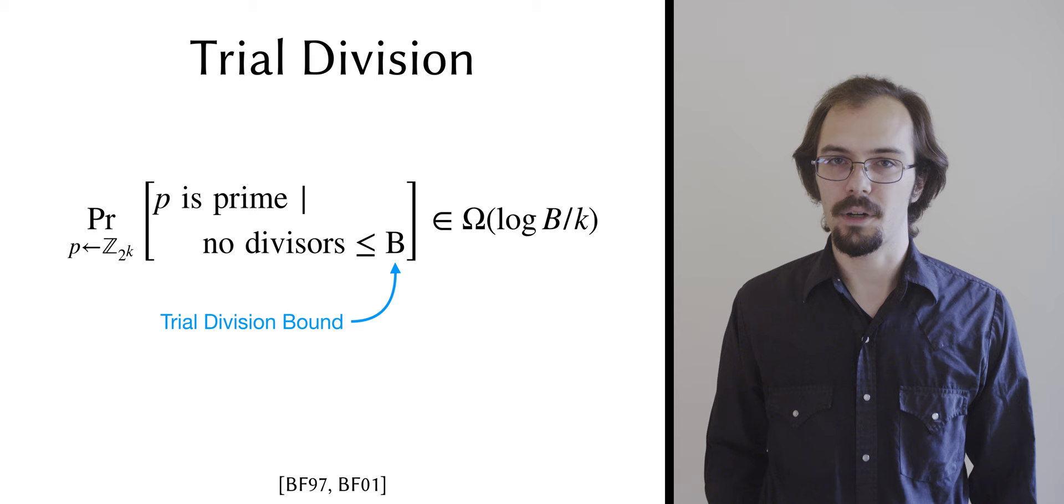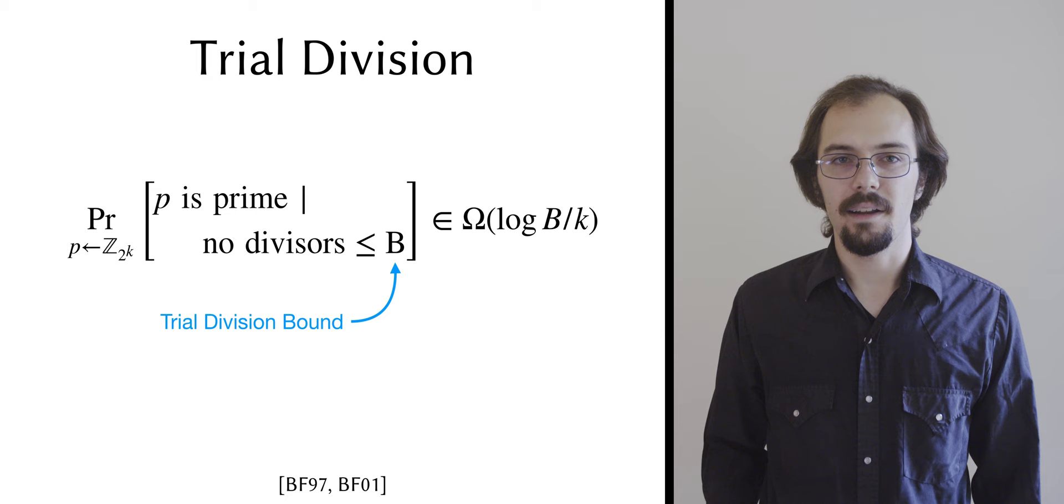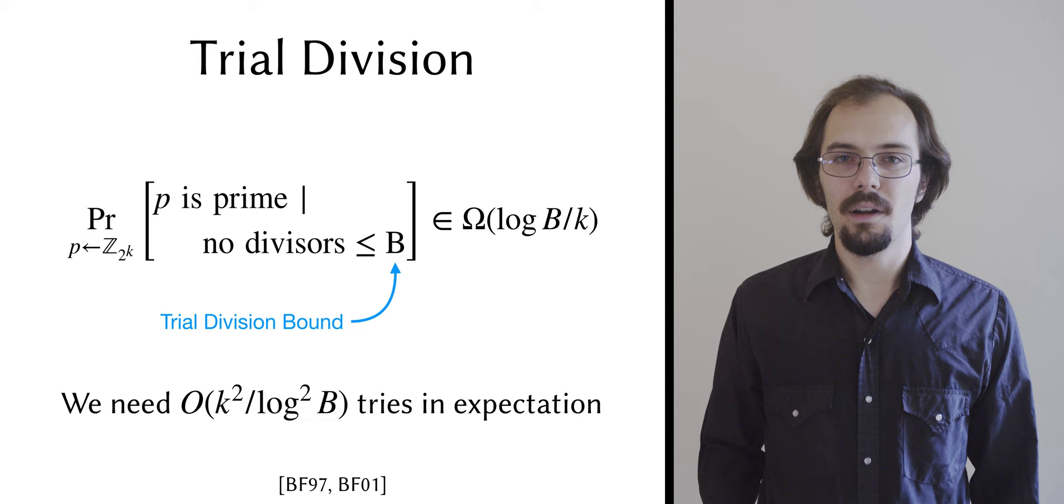The probability that the biprimality test succeeds is the square of that, and if you repeat the whole protocol until you successfully sample a biprime, then the number of times that you have to repeat it is in expectation O of k squared over log squared of b.